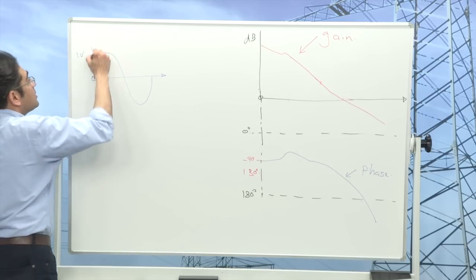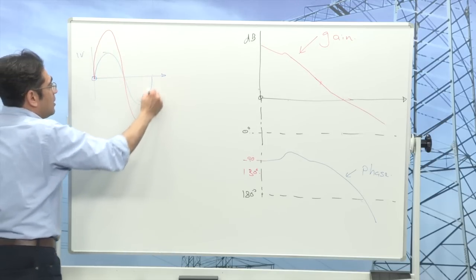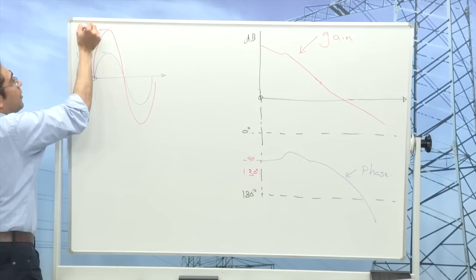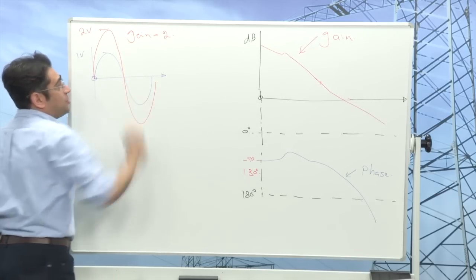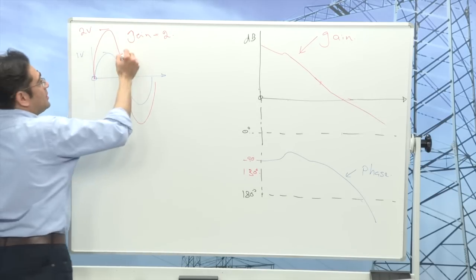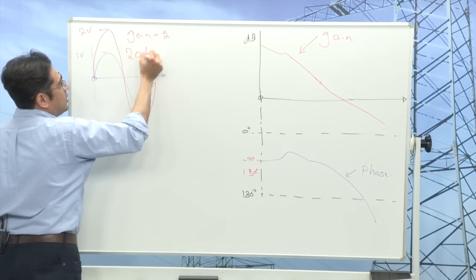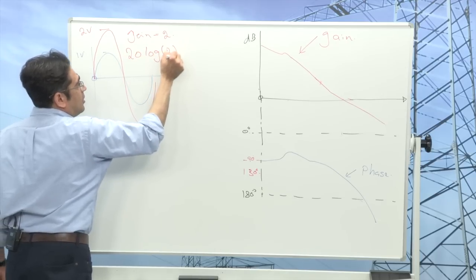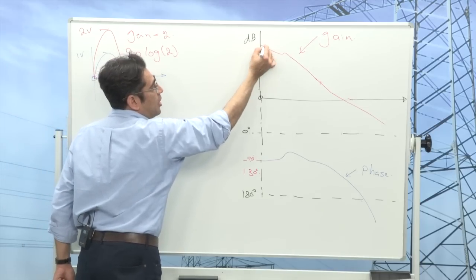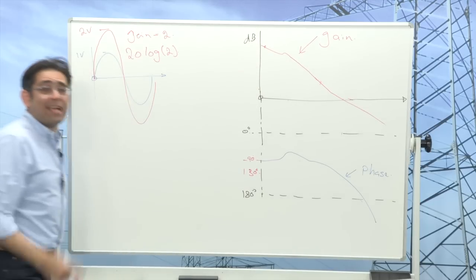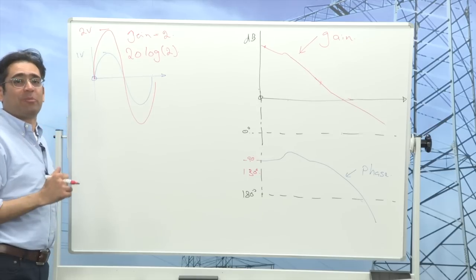For simplicity let's say that the height of this is one volt, it never is it's usually much much smaller, and I look at how this is modified when it comes out of my system. Let's say when I measure the sine wave that comes out it has got a height of 2 volts, then I have a gain of 2.